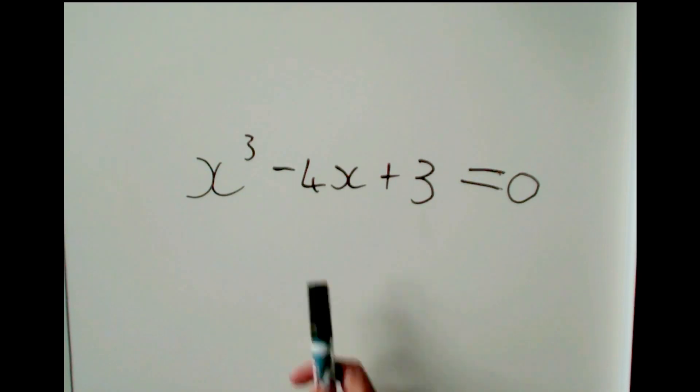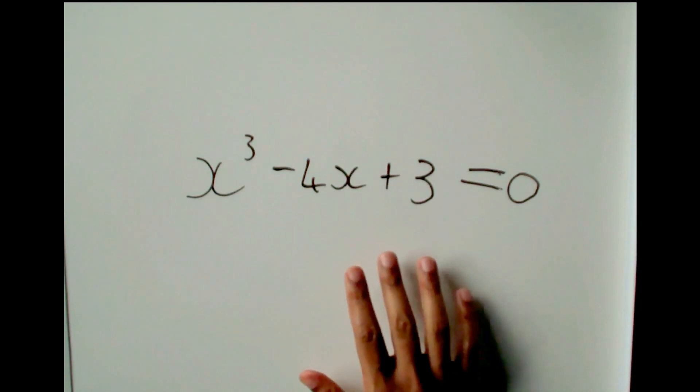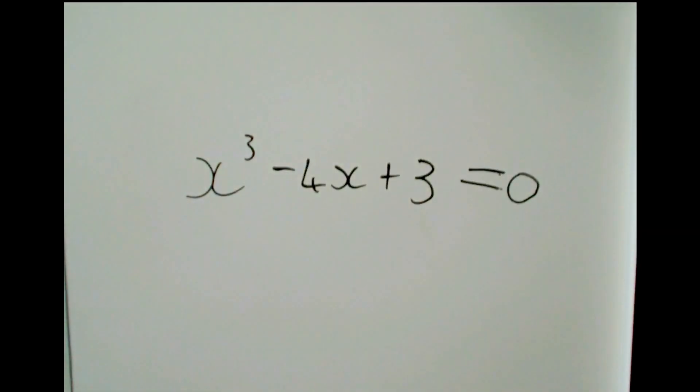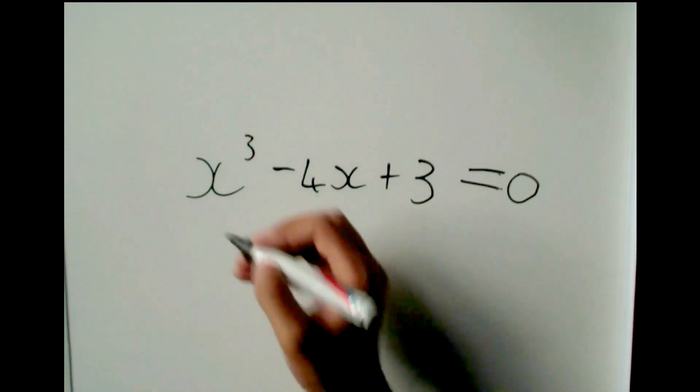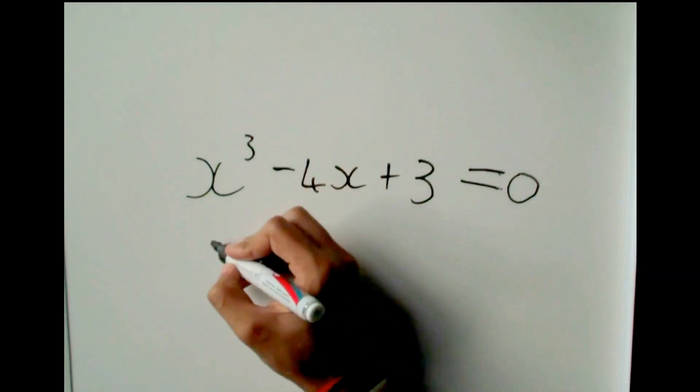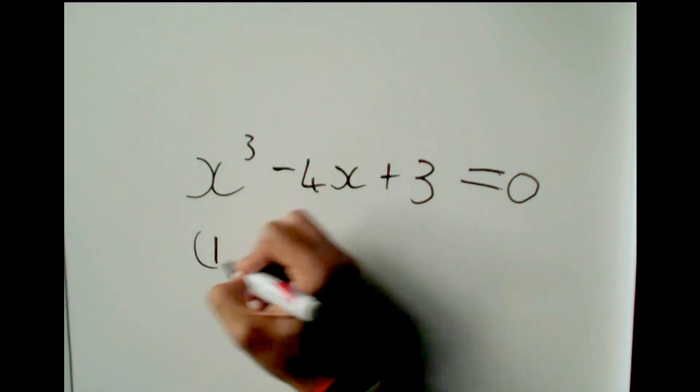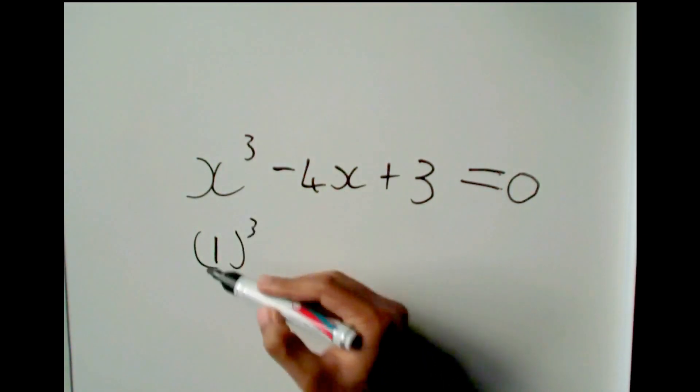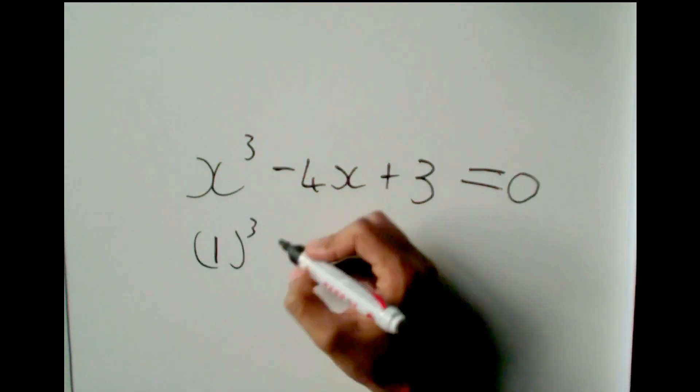What I mean by that is we need to guess a value of x that this side over here equals zero. So we will try putting, let's say I know my positive 1 will work. So let's put that in. So I will guess that x is positive 1.